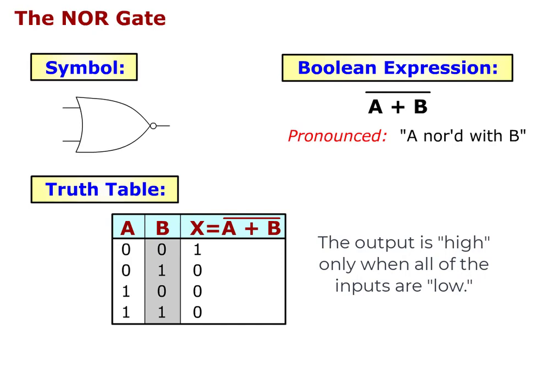This symbol, Boolean expression A ANDed with B, and truth table for the NOR gate. The truth table's output is HIGH only when ALL the inputs are LOW.